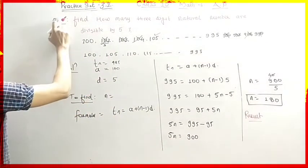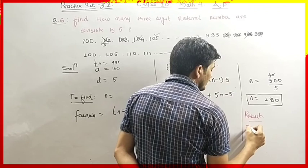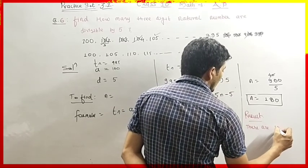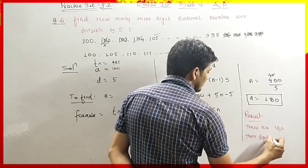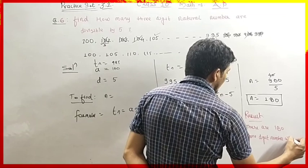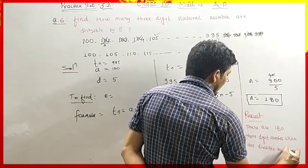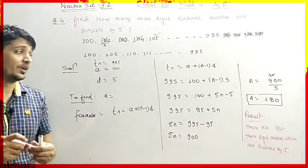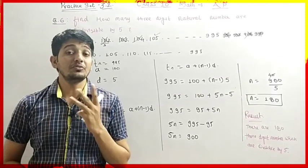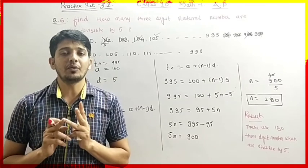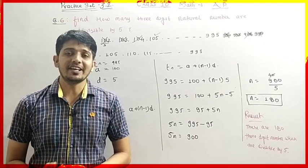It is actually the sixth problem, not the seventh. The result is: there are 180 three-digit numbers which are divisible by 5. This is our answer. There are three homework questions: question number 1, question number 3, and question number 5. We will see you in the next video. Thank you.